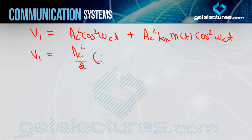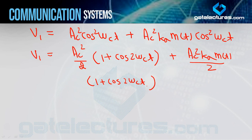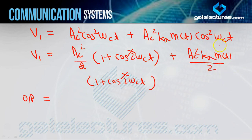V1 = AC²·cos²(ωC·t) + AC²·KA·m(t)·cos²(ωC·t). Expanding using cos²θ = (1 + cos2θ)/2, this becomes: AC²/2·(1 + cos2ωC·t) + AC²·KA·m(t)/2·(1 + cos2ωC·t). The output goes through the low pass filter, which passes only 0 to FM frequencies and rejects higher frequencies.